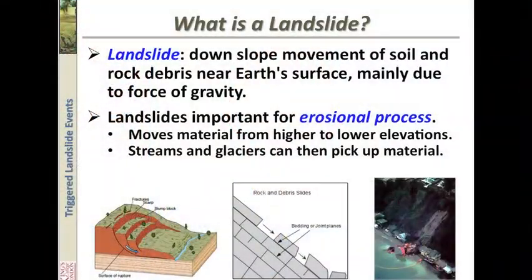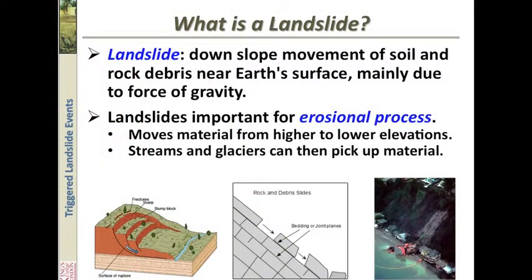What is a landslide? A landslide is basically any downslope movement of soil combined with the underlying upper rock layer — if we could call it the regolith — and this is due to the force of gravity. Landslides are very important for erosional processes. They move material from high to low elevation, and then streams and glaciers can pick up this material.